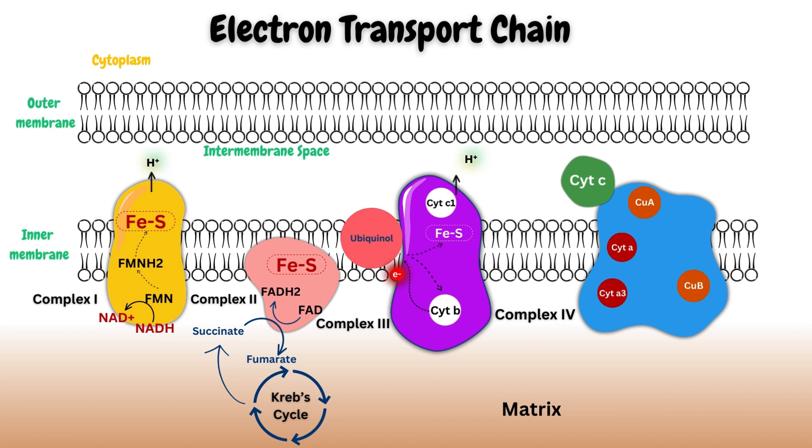The two electrons are transferred from two cytochrome C molecules to copper A center one by one, then to cytochrome A and then cytochrome A3. The two electrons reduce both cytochrome A3 and copper B. These reduced form metals bind oxygen molecule, forming peroxide bridge between cytochrome A3 and copper B. When additional two electrons from other two cytochrome C and protons from matrix are transferred, the peroxide bridge breaks, forming hydroxides. Other two protons are entered to form two molecules of water. During this process, four protons are pumped from matrix to intermembrane space by complex 4.